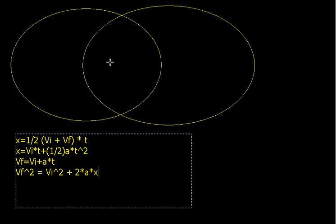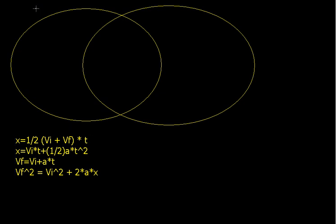Now let's think about what variables work in the i-units, or the x direction, and what variables work in the j-units, or the y direction. The time is going to be the same for both of them, because time isn't going to change whether you're going in x or y.